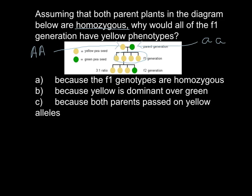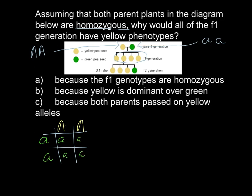If we build a Punnett square with AA on the top and small aa on the left, we can find the genotype of the F1 generation. Each cell will be capital A and small a — so all of the F1 generation will be heterozygous but uniform. As long as all of them have one dominant and one recessive allele, they express the same phenotype.